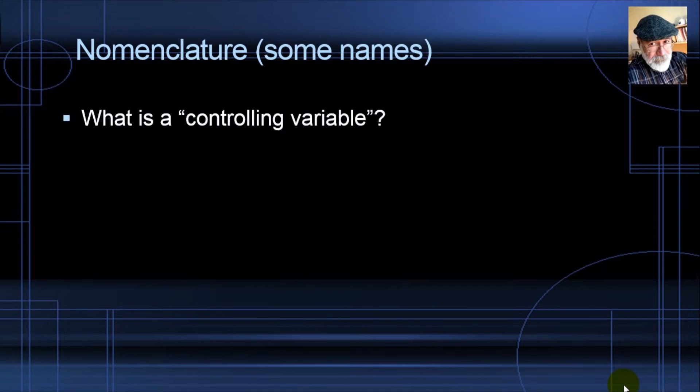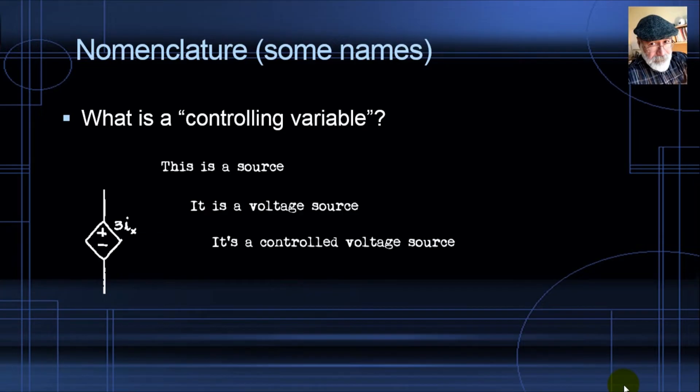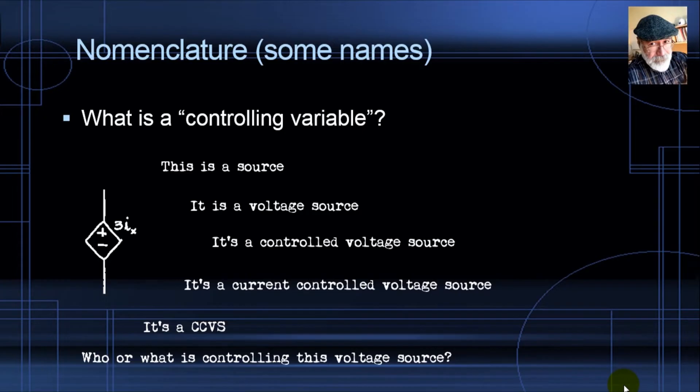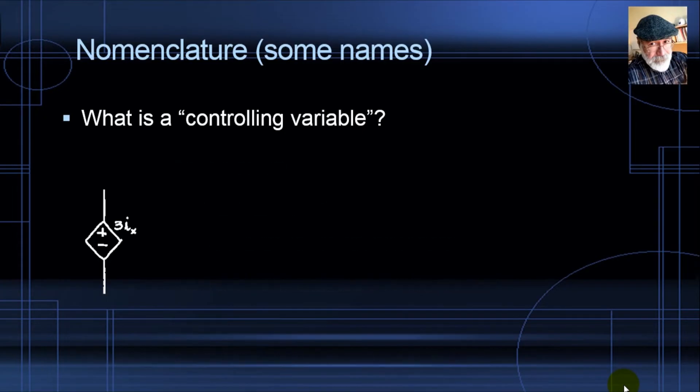Let's begin with controlling variable, which is a name we'll use a lot. What is a controlling variable? In that case, what do you see there? You say that's a source, that is a voltage source, that is a controlled voltage source, that is a current controlled voltage source, that is a CCVS. Fine, but who or what is controlling that source? You think about that for a little while and realize that Ix is controlling that source. Ix is deciding what is the value of that voltage source. Ix is a controlling variable.